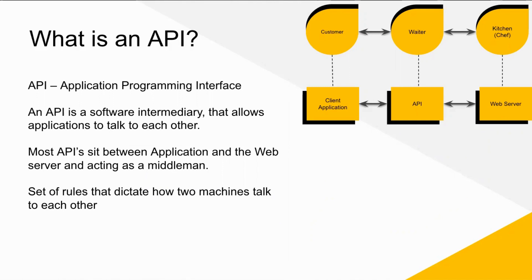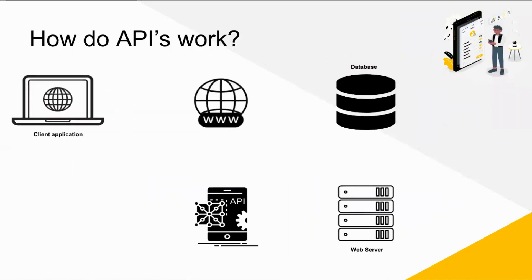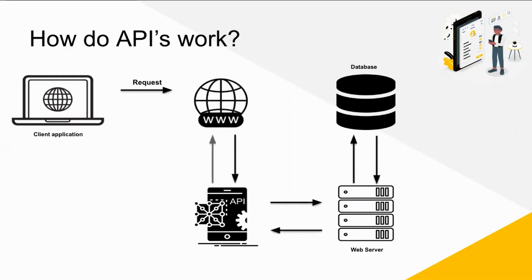Now let us see how APIs work. API architecture is usually explained in terms of client and server. The application sending the request is called the client and the application sending the response is called the server. Depending on the need and the purpose, APIs can work differently. In the client world, this is offered by the browser, whereas in the server world, this is provided by the web service, which can either be SOAP or REST.